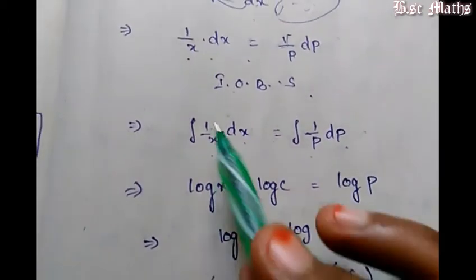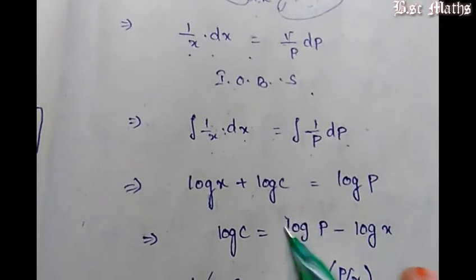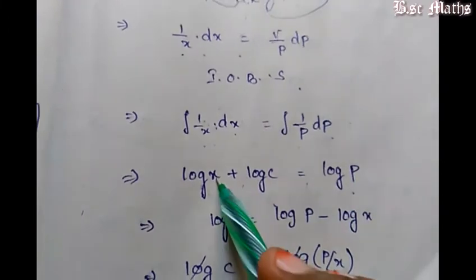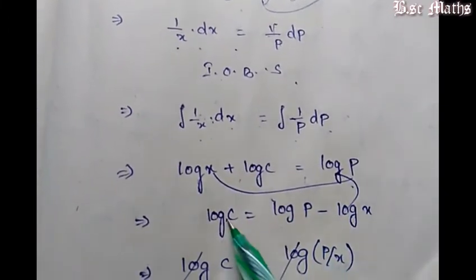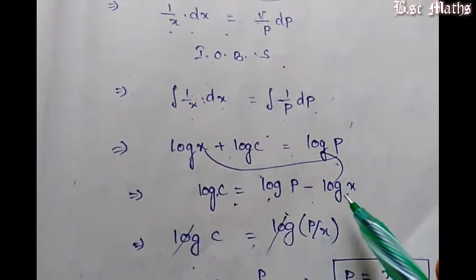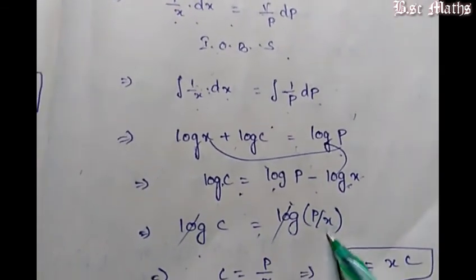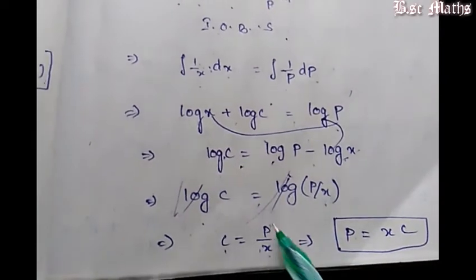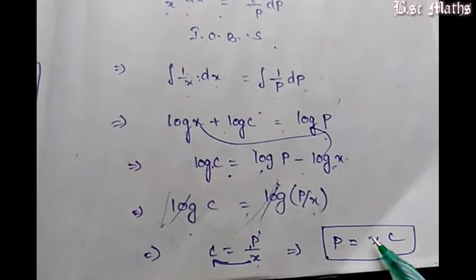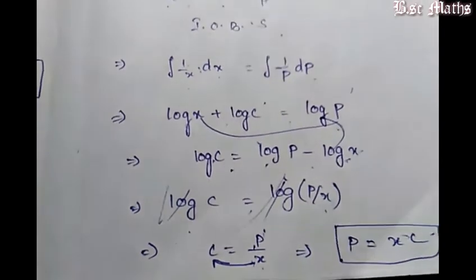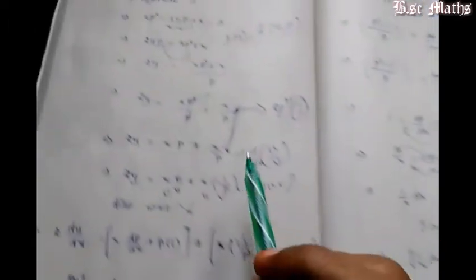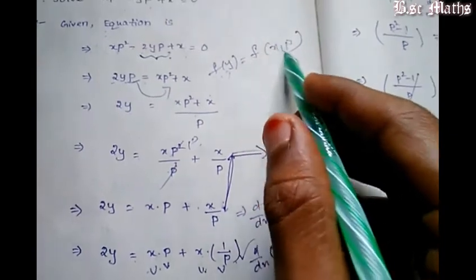Integral 1 by x into dx equals log x plus constant. This equals log p. So log C equals log p minus log x. Using log A minus log B equals log A by B: log C equals log p by x, so C equals p by x, therefore p equals C into x.